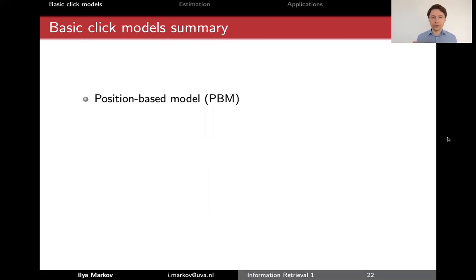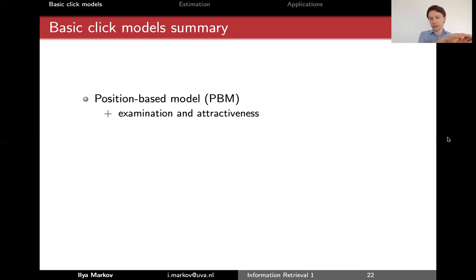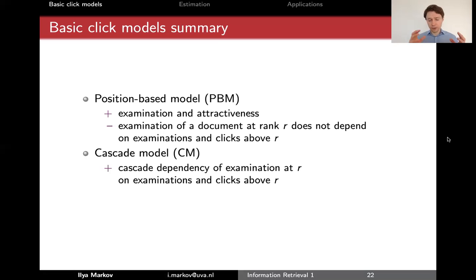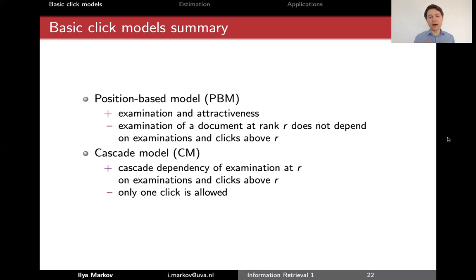In summary: the position-based model's key breakthrough is that it separates examination from attractiveness. In this way, bias goes into examination and real relevance goes into attractiveness. The problem with it is that it doesn't take into account previous clicks, which are very important in reality. That is addressed by the cascade model, which creates a dependency between previous and subsequent clicks. But the problem with the cascade model is that only one click is allowed. With this, you should have an idea of what basic click models look like, and if you're interested, you can read the book for more details.